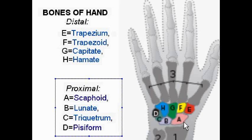Row one: scaphoid, lunate, triquetrum, and pisiform. That's it. Those are the bones of the hand. Bye-bye now.